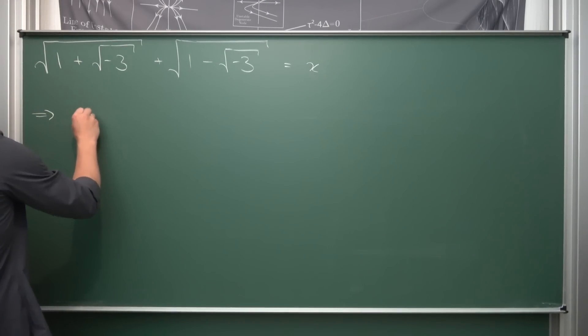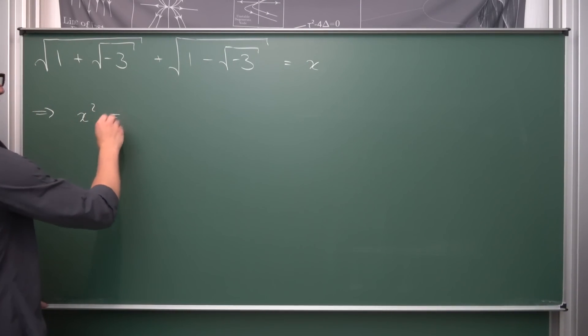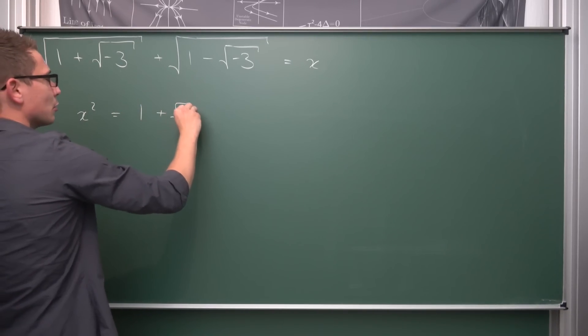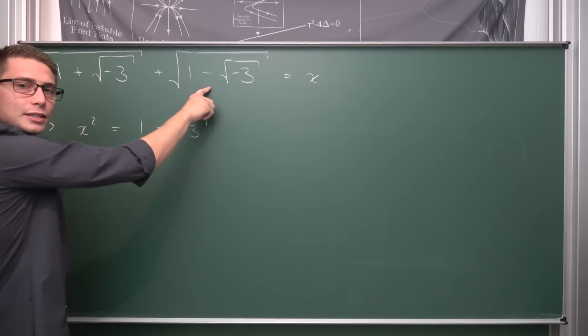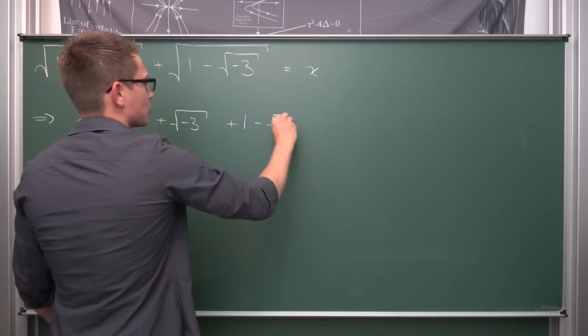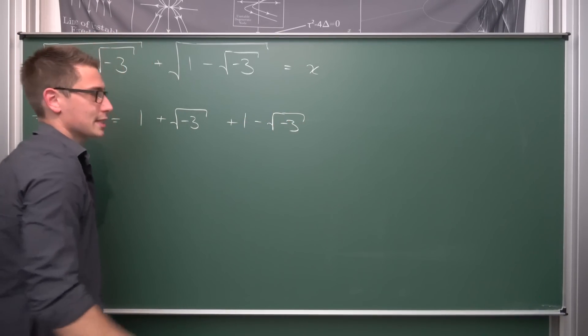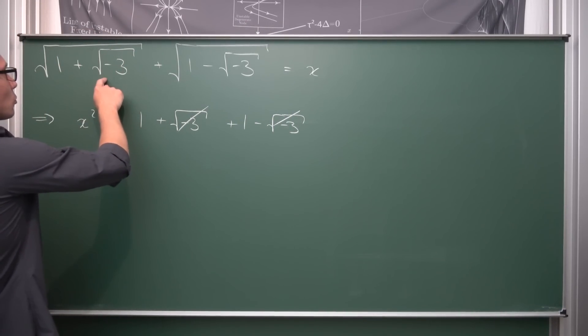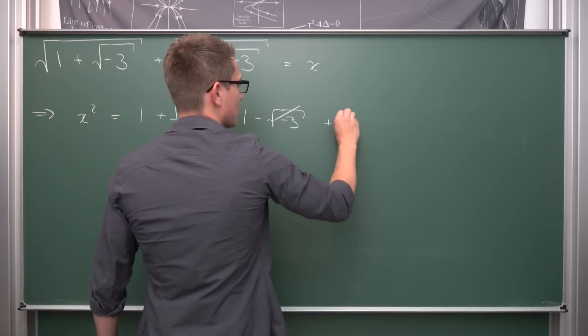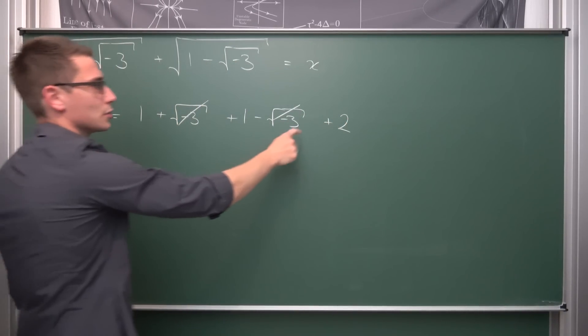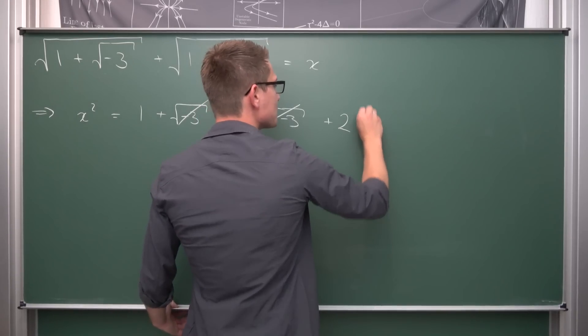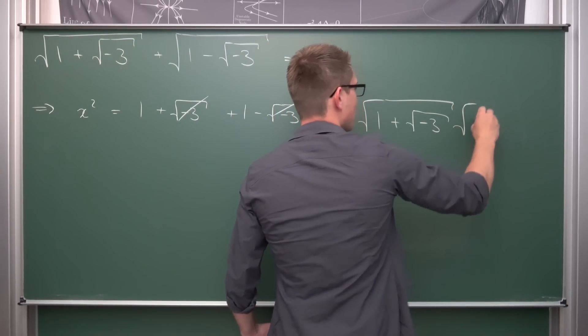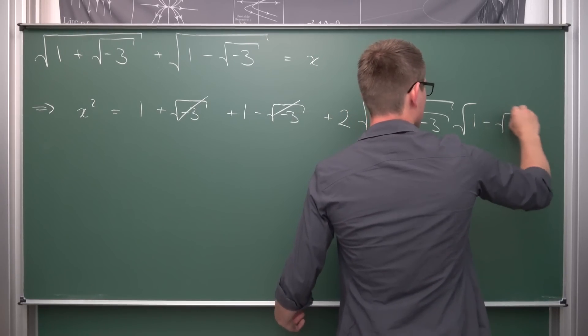If we were to square x, we are going to get x squared, obviously. Then we are going to use the binomial theorem. Squaring the first term is going to give us 1 plus the square root of negative 3. Now this part squared is going to give us plus 1 minus the square root of negative 3. And as proposed a second ago, we are going to get rid of the square root of negative 3. This is good. And now we are going to multiply these two together, but we are going to get it two times. And since we have a plus in the middle, we are also going to get a positive sign here. So 2 times the square root of 1 plus the square root of negative 3 times the square root of 1 minus the square root of negative 3.